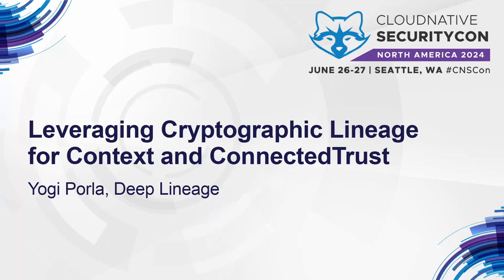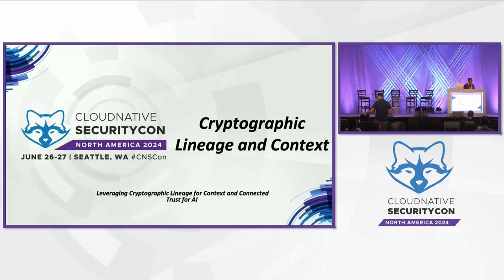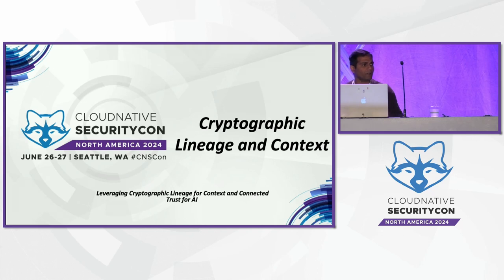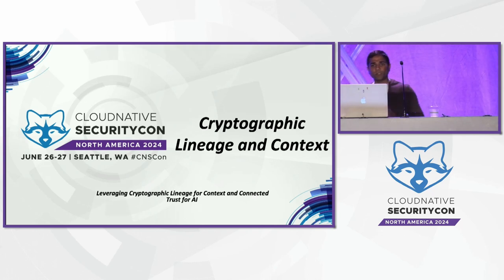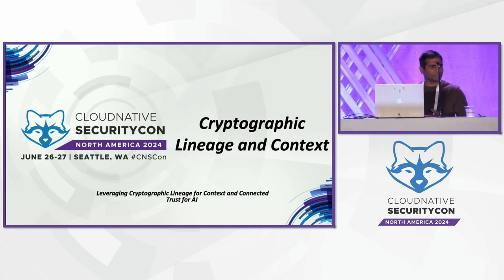Today I'm here to talk about cryptographic lineage and context for securing AI, specifically generative AI. How many here are familiar with the concepts of SPIFFE and SPIRE? This talk focuses on bits and pieces of SPIFFE and SPIRE, though I won't delve too much into that because there are almost nine talks at this conference that focus on SPIFFE and SPIRE.